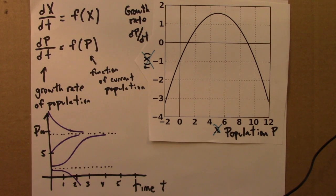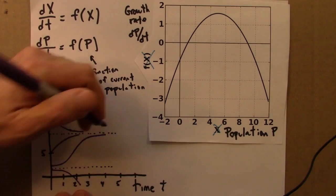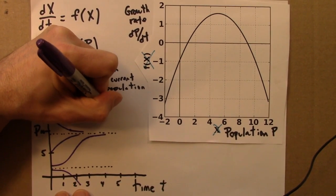Okay, so these purple curves, I would say these are solutions to this differential equation for four different initial conditions. So, these purple curves are p as a function of t.